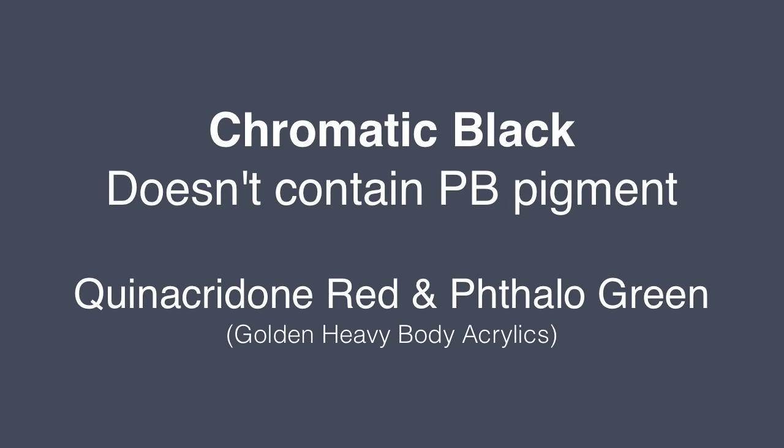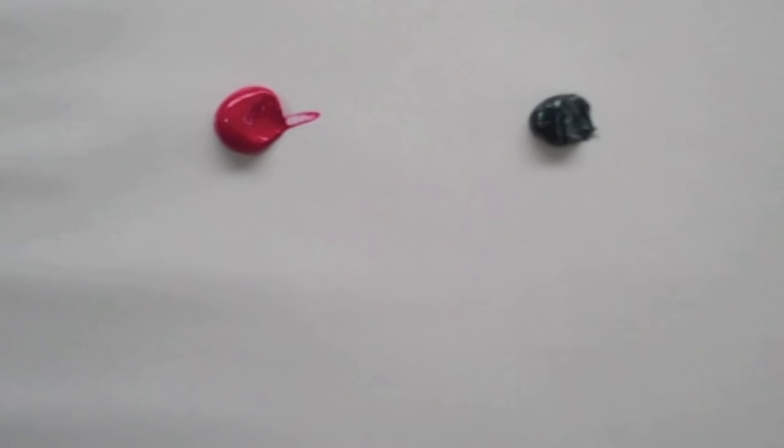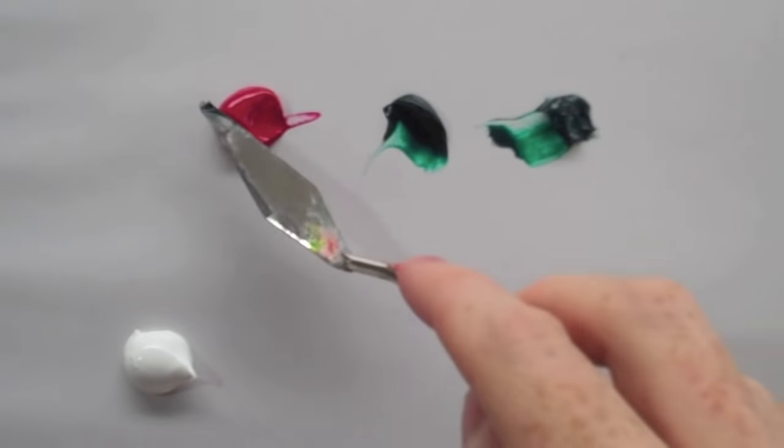Another way to make a chromatic black—a black that doesn't contain any PBk black pigment—is to use phthalo green and quinacridone red. Gamblin, the paint manufacturers, make an actual black pre-mixed with these together. It can be very handy for tinting colors down because it has quite a neutral tone.